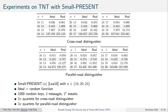To get an intuition of whether both distinguishers can work, we implemented them with a small variant of PRESENT by Leander with state sizes of 16, 20, and 24 bits, comparing against a random function using 1000 random keys, random messages, and two tweaks per experiment. We observed the expected number of quartets and about twice the number of quartets for the real construction as for the ideal one in the crossroad case, and about three times for the parallel road case, matching our intuition well.